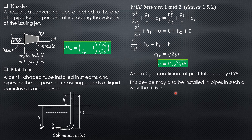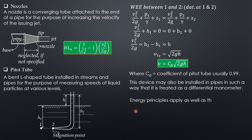This device may also be installed in pipes, in which case it is treated as a differential manometer. Energy principles apply, as well as the principle of pressure transmission — use the energy equation and sum up pressures from one point to another to analyze situations where a Pitot tube is present.